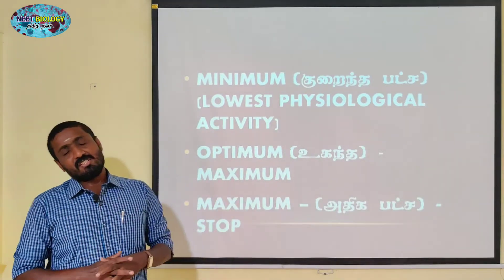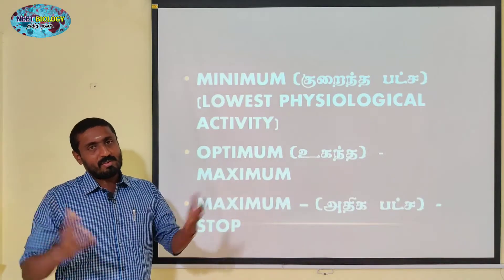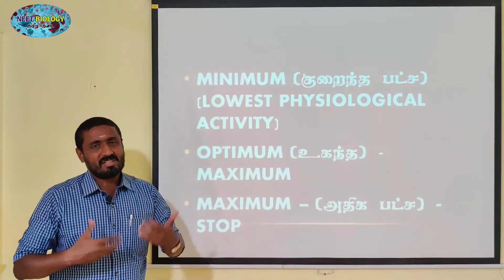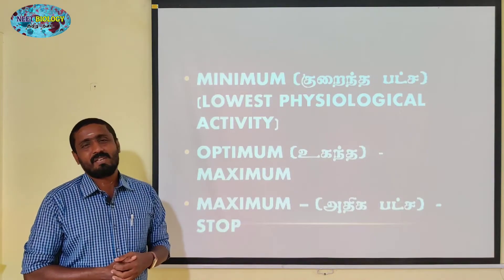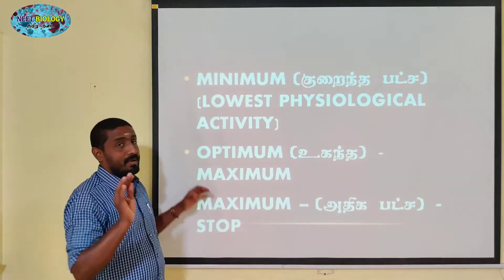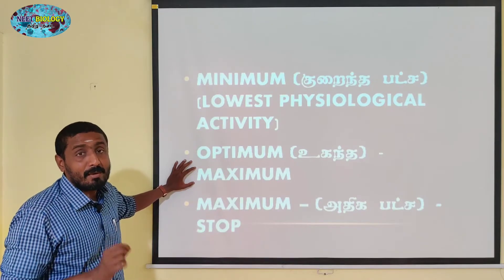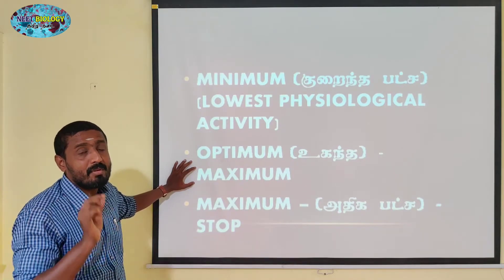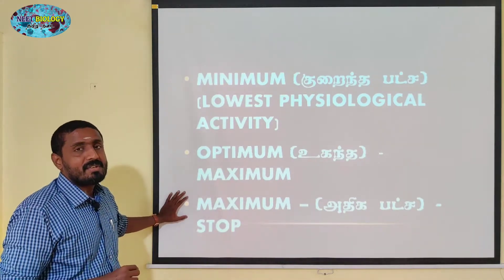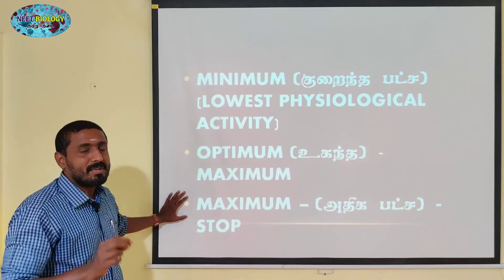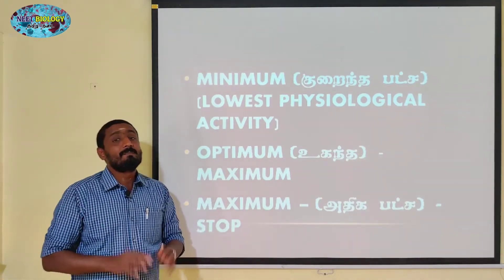We maintain 36 degrees Celsius body temperature. When the surrounding temperature is lower, we struggle to maintain 36 degrees Celsius. At that time there is maximum physiological activity. When optimum temperature is present, next comes maximum temperature — at maximum temperature all the metabolic activities and physiological activities will be stopped.